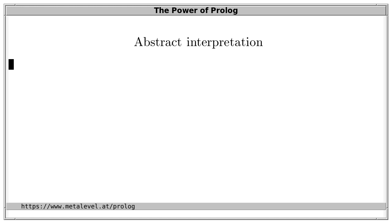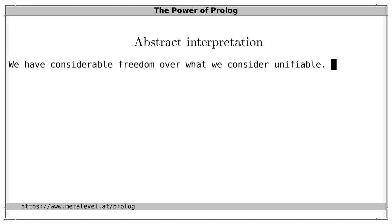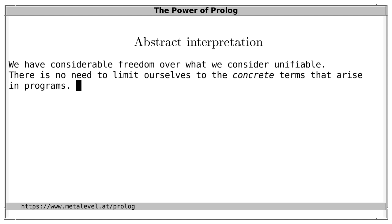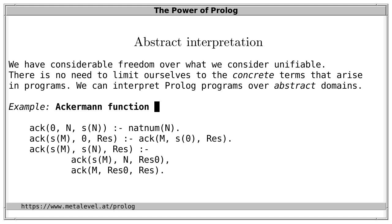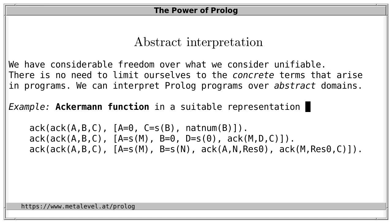We may reason about abstract domains where we consider entire sets of terms identically. For instance, let's take the Ackermann function — after the Sudan function, the second function shown to be recursive but not primitive recursive. Using successor notation we can write it in Prolog. For easier reasoning, we can also use a clean representation where all unifications involving compound terms are explicit using '='. We can then interpret this differently: instead of reasoning about concrete numbers 0, 1, 2, 3, let's reason about an abstract domain consisting of 0 and 1 as specific numbers, and 'even' and 'odd' for all other natural numbers.